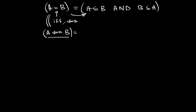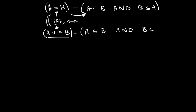So: A implies B, and B implies A — this is the symbol for if-and-only-if. And this is the same thing as A is a subset of B and B is a subset of A.